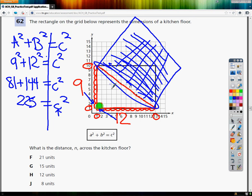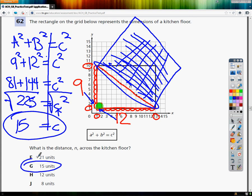Or the root of it. So I need to take the square root of C squared. And the square root of 225 is 15. So my final answer, what is the distance across the kitchen floor, is G, 15 units.